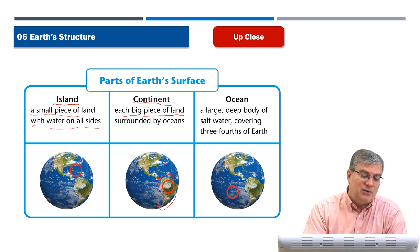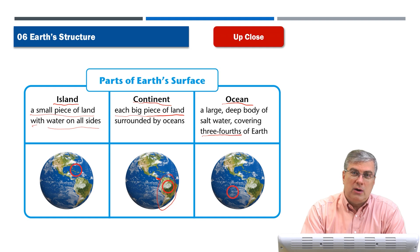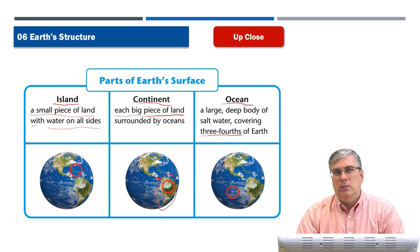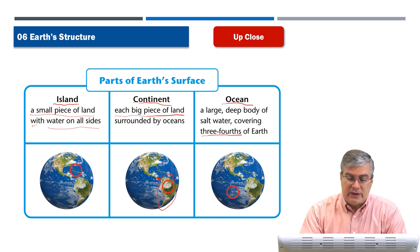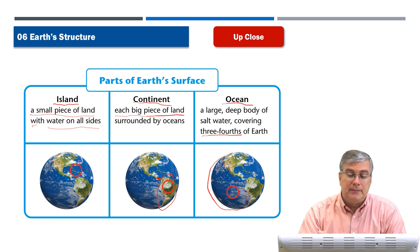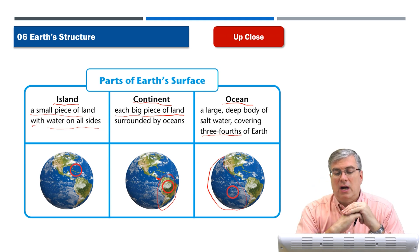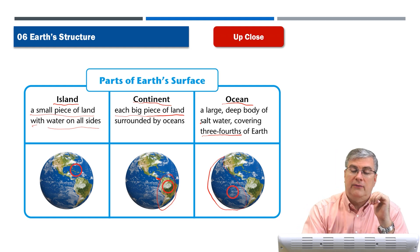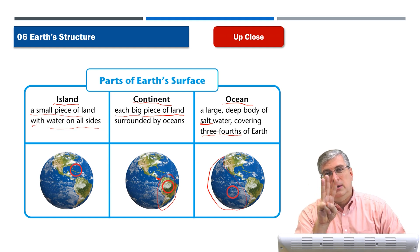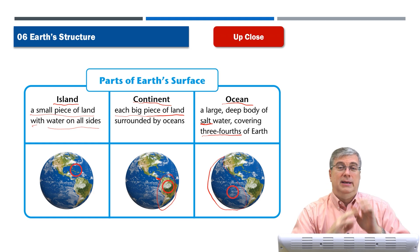Did you know that the oceans cover three-fourths of the earth? So most of the earth is covered with water. We call these oceans — salt water, huge oceans. The Pacific Ocean is the biggest ocean on earth. There's also the Atlantic Ocean, the Indian Ocean, and the Arctic Ocean. It's a large, deep body of salt water, and it covers three-fourths of the earth. Human beings can only live on one-fourth of the earth — the land.